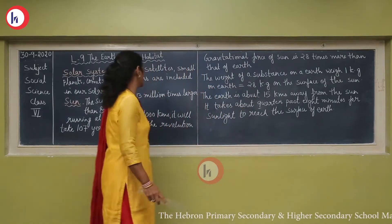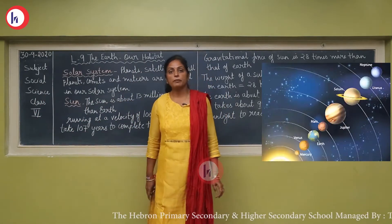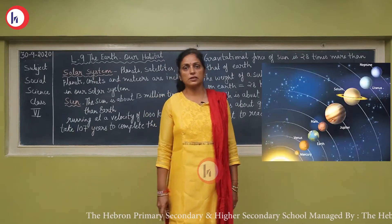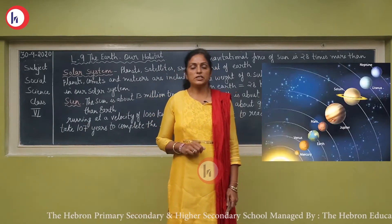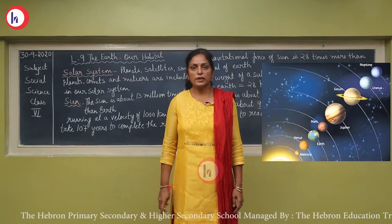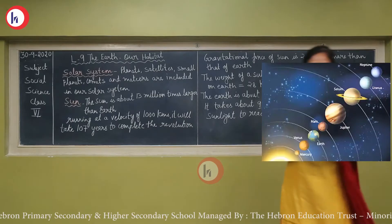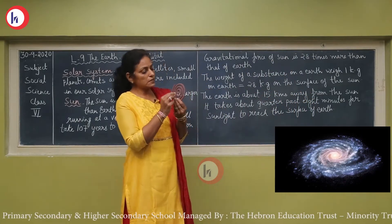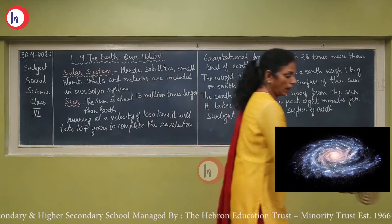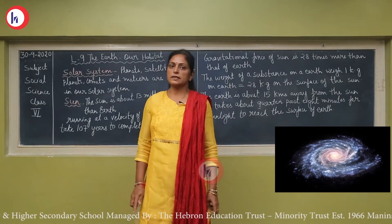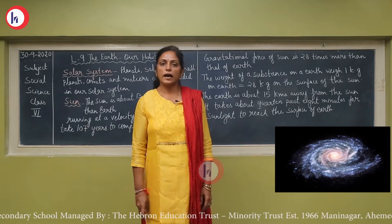Let us discuss the solar system. The sun is a self-illuminated star of the Mandakni galaxy. A galaxy is a large constellation with a central core and rotating arms. Each galaxy consists of billions of stars. Our own galaxy is known as the Mandakni galaxy, which is spiral in shape — a long curved line moving round and round from the center. It is also known as the Milky Way galaxy because it appears as a milky band of light, really visible in a dark area.